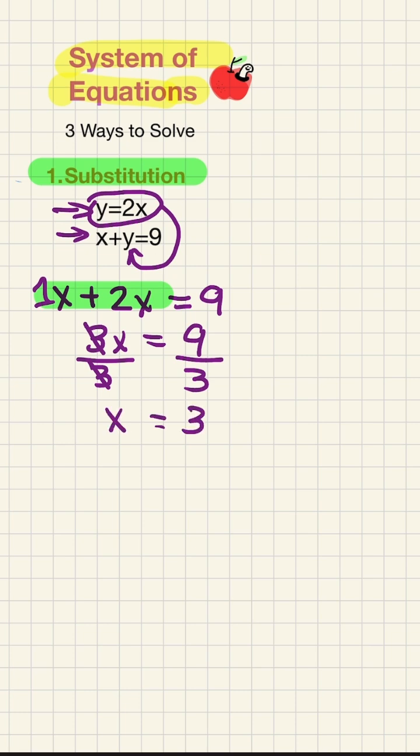Now that we know that x equals 3, let's plug it back into that original equation of y equals 2x. So y equals 2 times 3, and y equals 6.